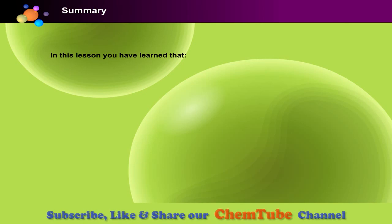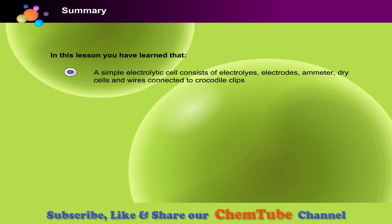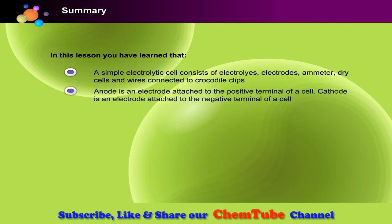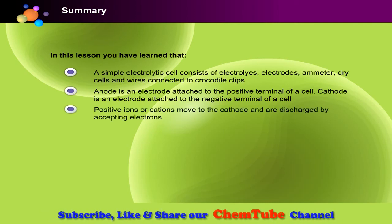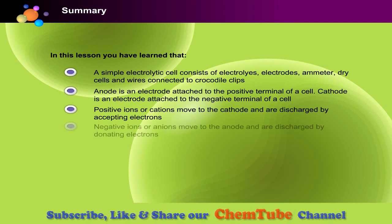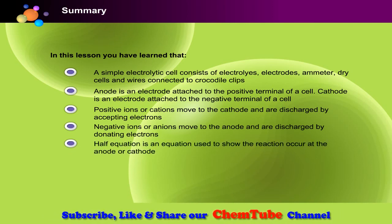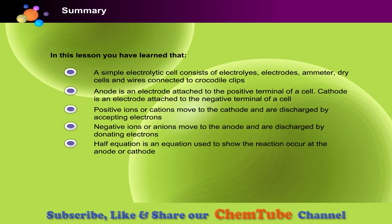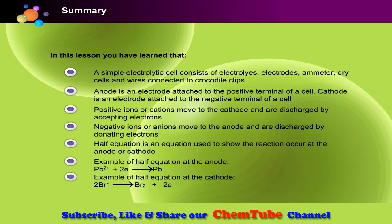In this lesson, you have learned that a simple electrolytic cell consists of electrolytes, electrodes, ammeter, dry cells, and wires connected to crocodile clips. Anode is an electrode attached to the positive terminal of a cell. Cathode is an electrode attached to the negative terminal of a cell. Positive ions or cations move to the cathode and are discharged by accepting electrons. Negative ions or anions move to the anode and are discharged by donating electrons. Half-equation is an equation used to show the reaction occur at the anode or cathode.